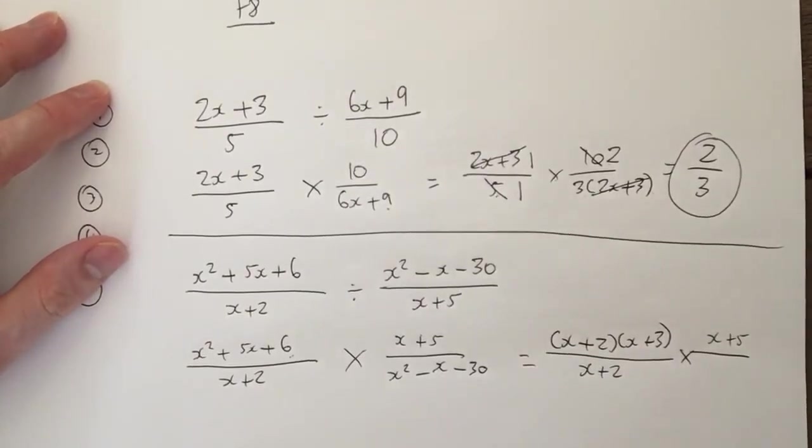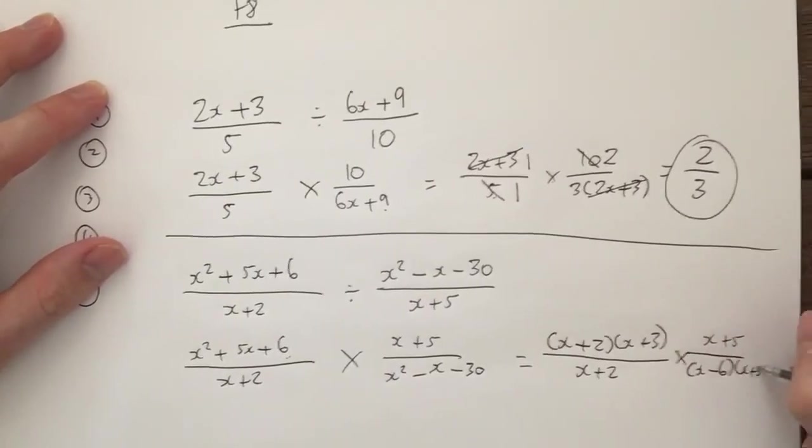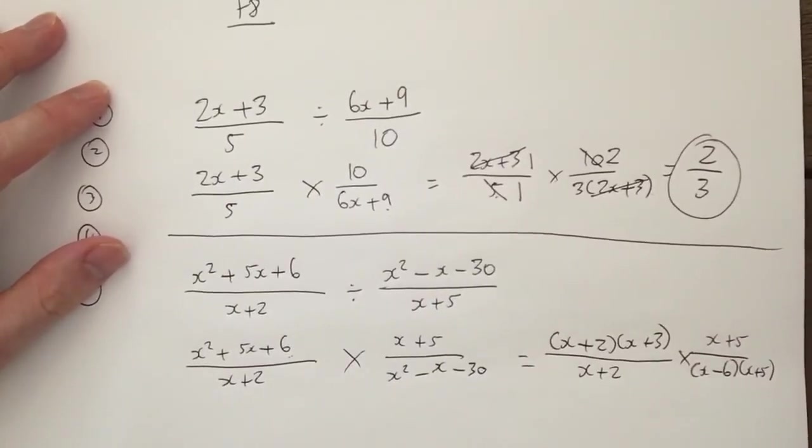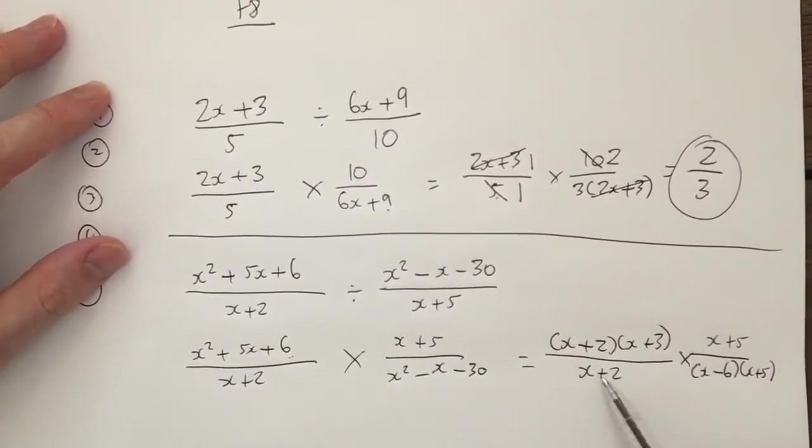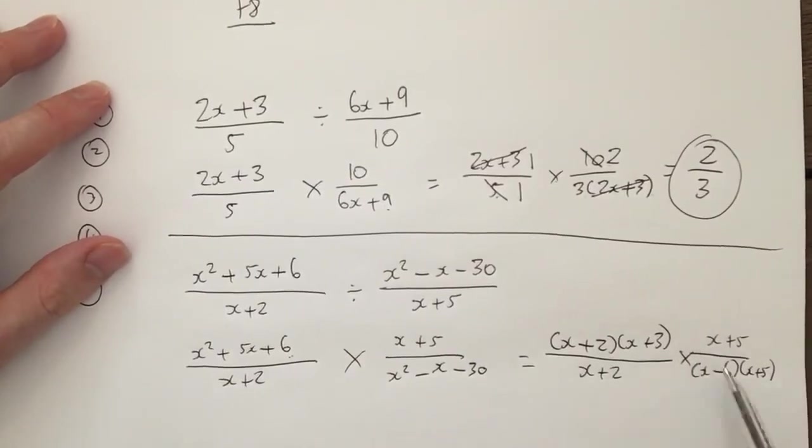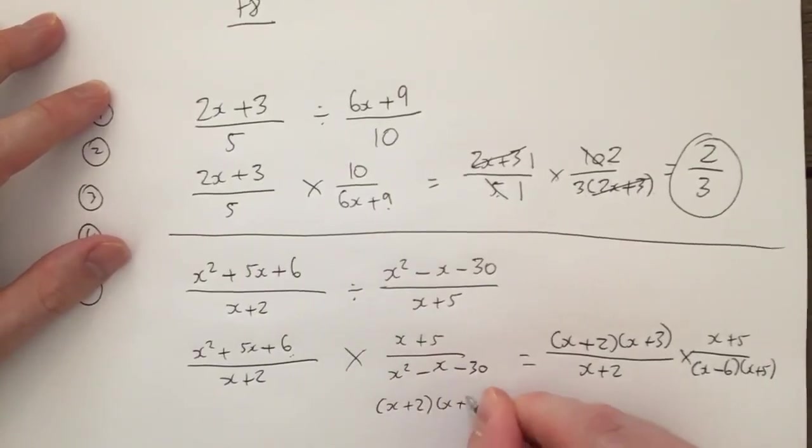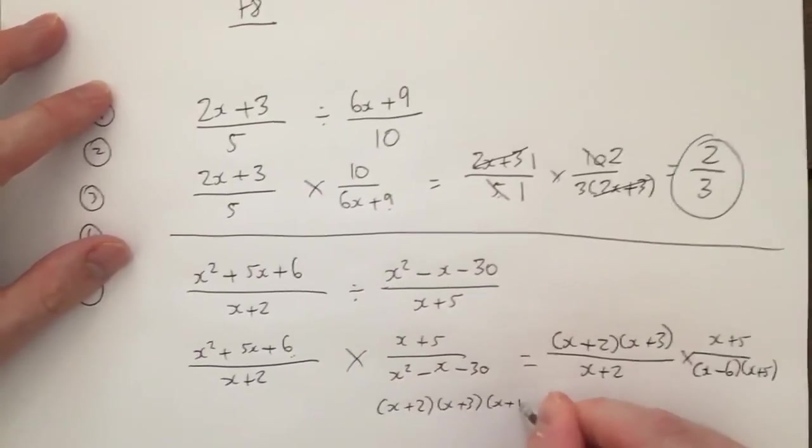Okay, right, now I look, can I cross simplify? Nope. Can I cross simplify? Nope. So therefore I'm going to multiply them, but watch how I do this. Multiply numerator and numerator, so it'll be x plus 2, x plus 3, x plus 5.